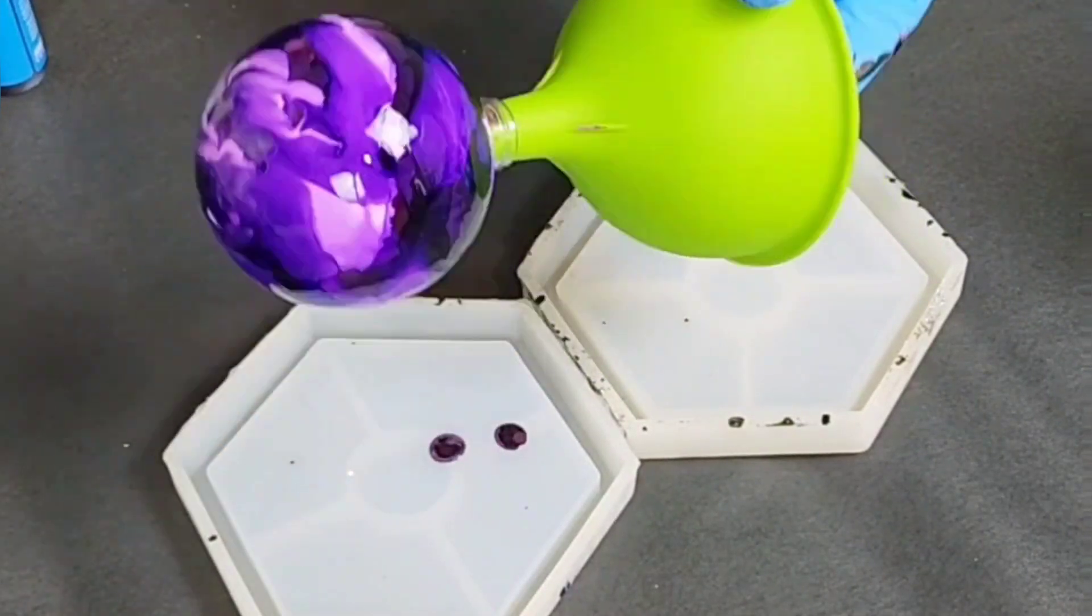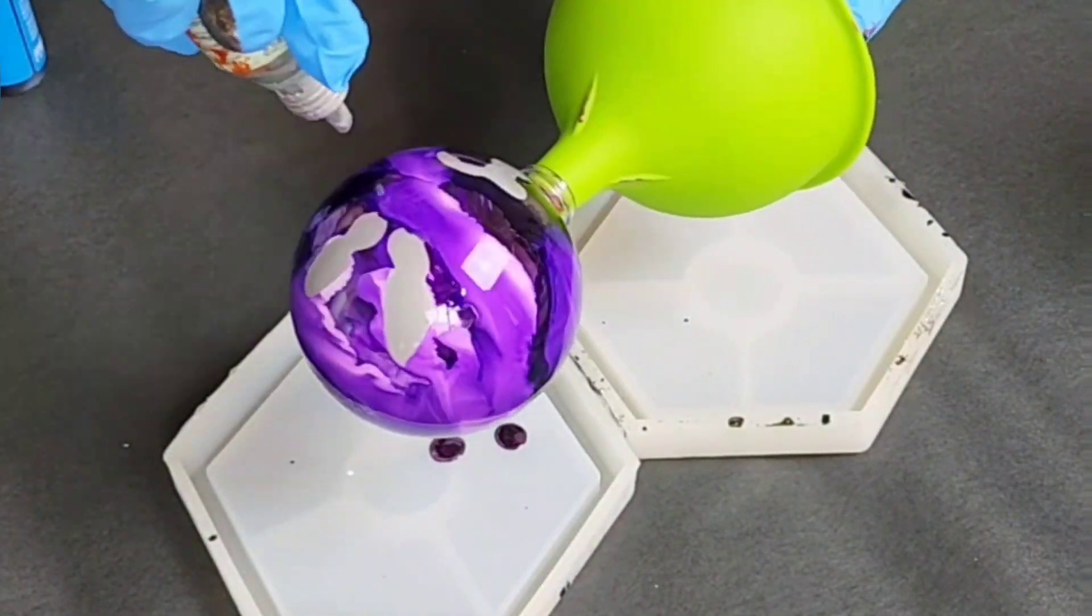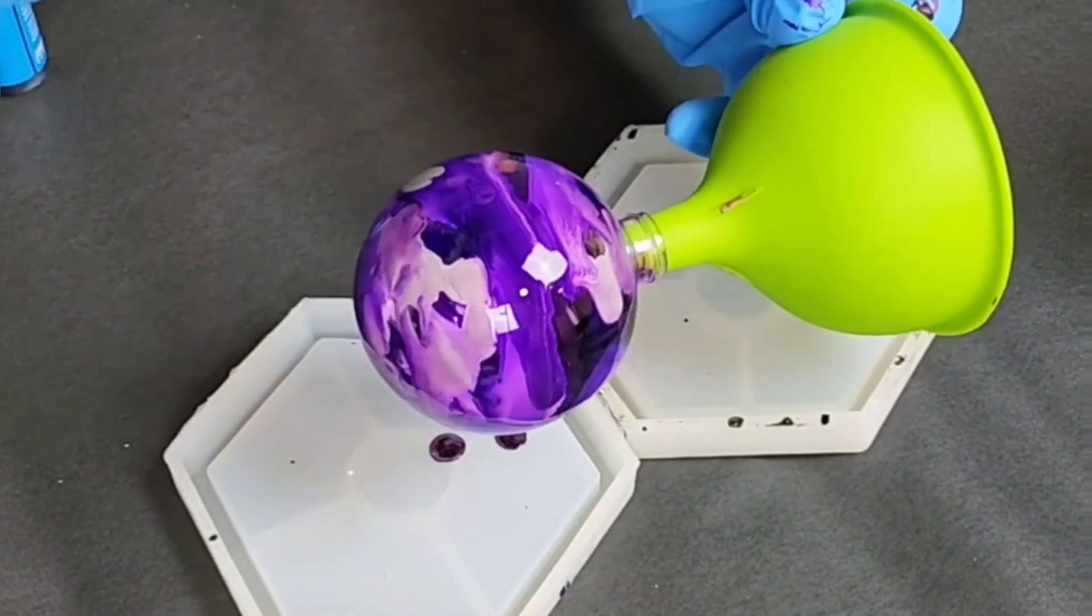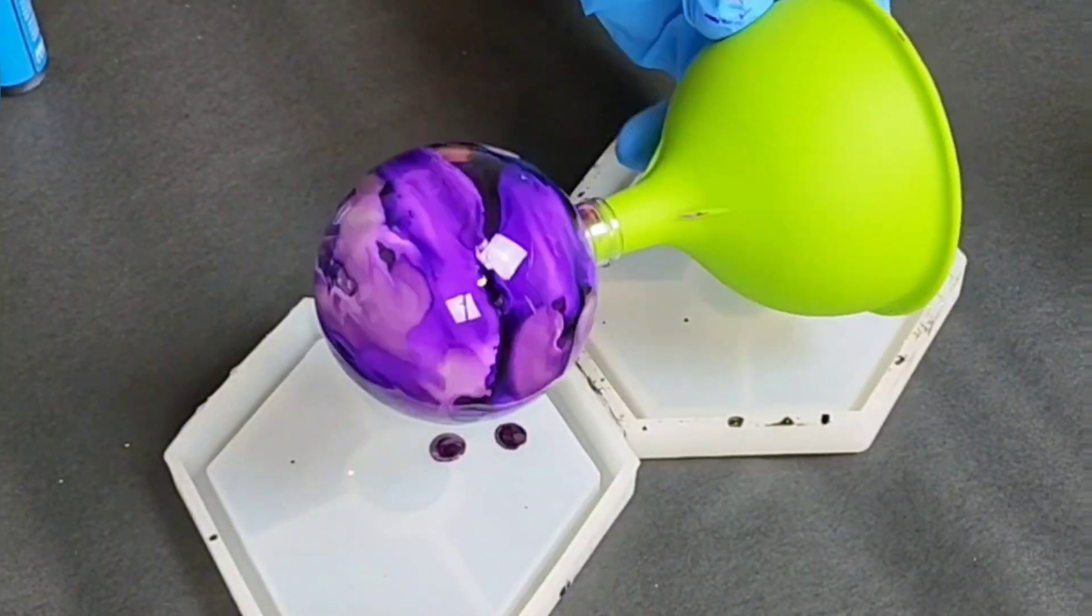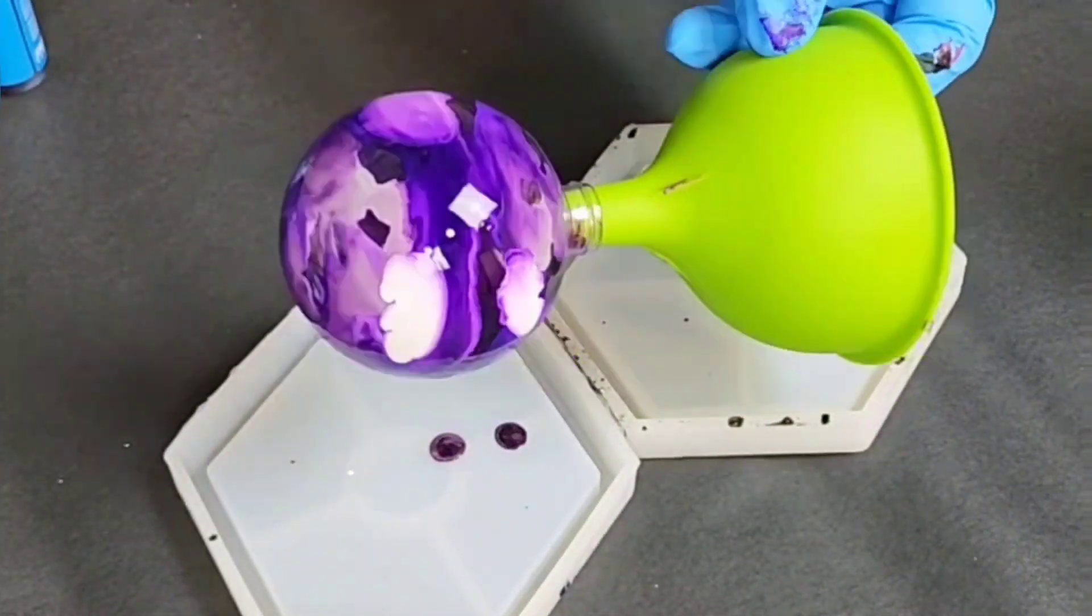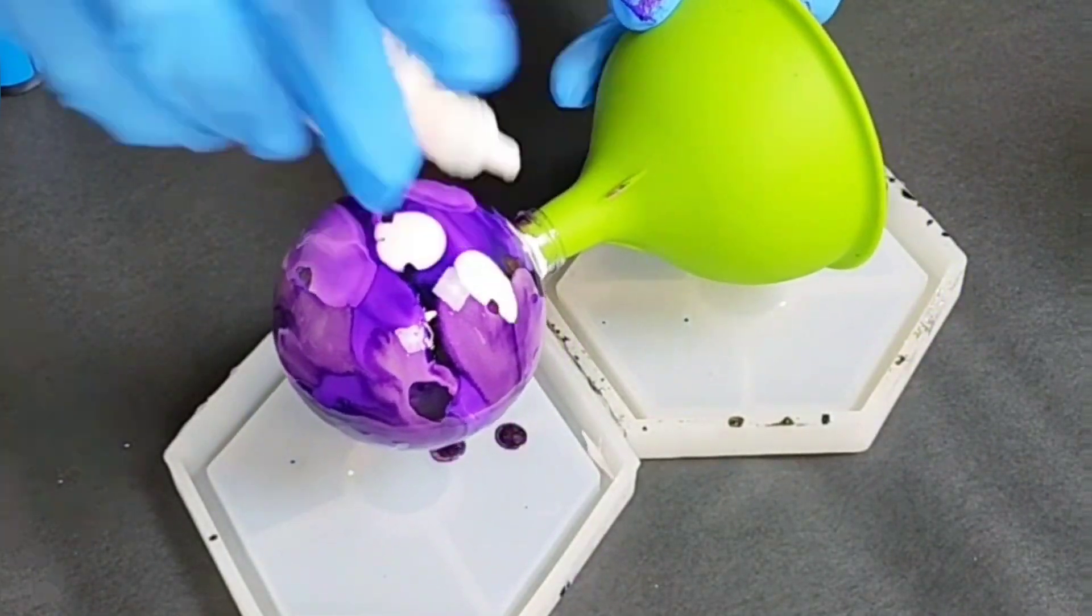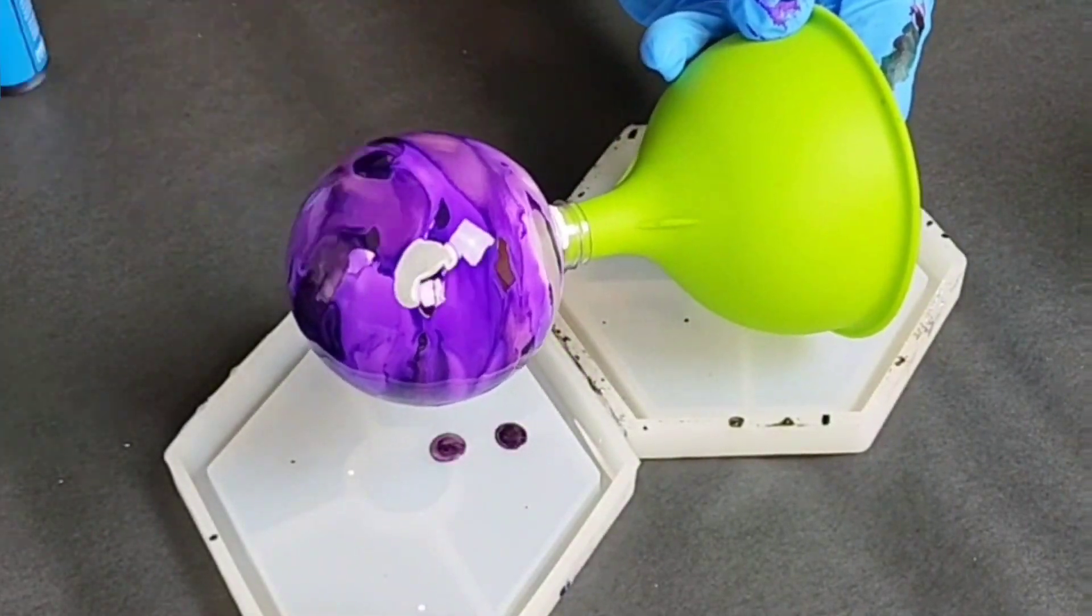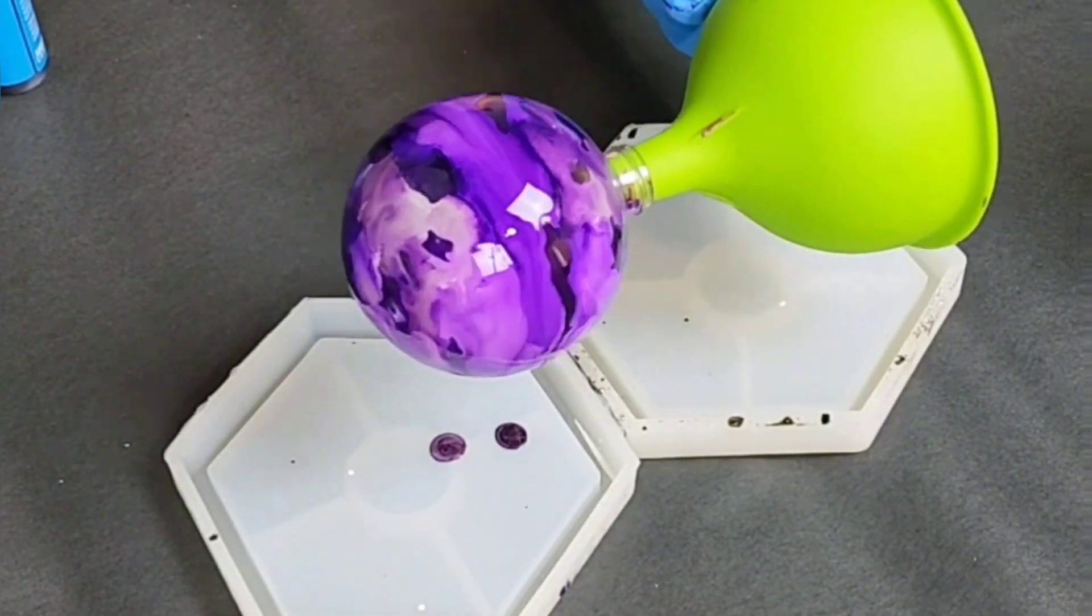They do dry very, very quickly though. So if you don't have any funnels or anything else to set it on, you can literally just hold onto it for a minute and it'll dry. You can also have a hairdryer nearby, but just be careful. You don't want to use any kind of heat source to dry it quickly because that can warp and melt the plastic balls.